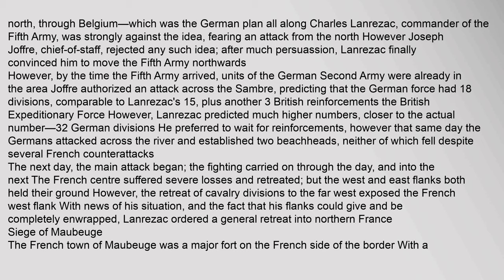Joffrey authorized an attack across the Sambra, predicting the German force had 18 divisions, comparable to Lanrezic's 15 plus another three British reinforcements. However, Lanrezic predicted much higher numbers — closer to the actual number of 32 German divisions. That same day the Germans attacked across the river and established two beachheads, neither of which fell despite several French counterattacks. The next day, the main attack began; the fighting carried on through the day and into the next. The French centre suffered severe losses and retreated, but the west and east flanks both held their ground. However, the retreat of cavalry divisions to the far west exposed the French west flank, and Lanrezic ordered a general retreat into northern France.